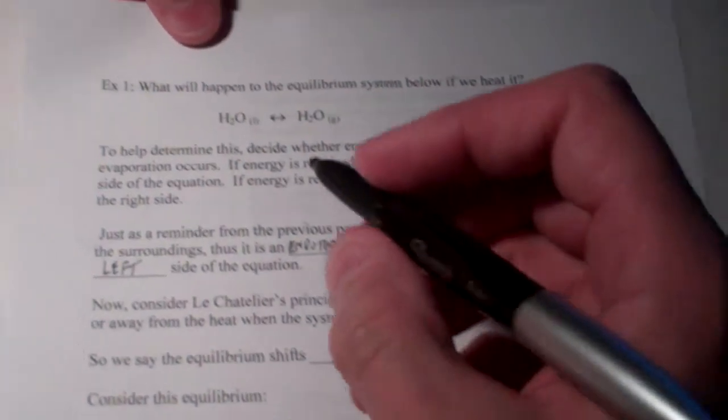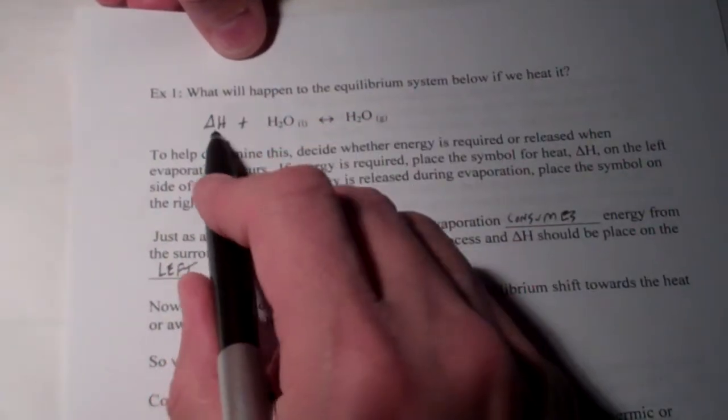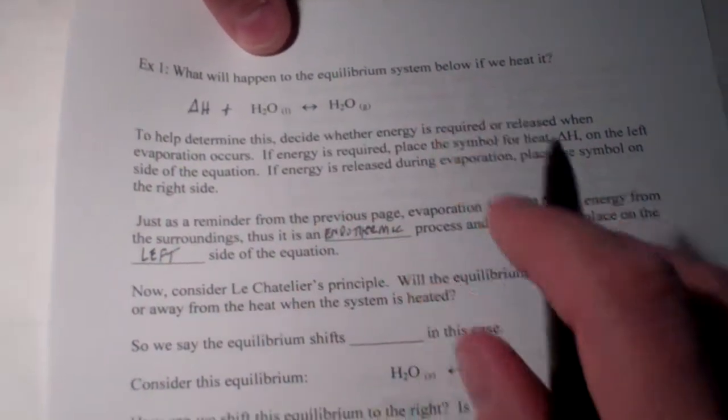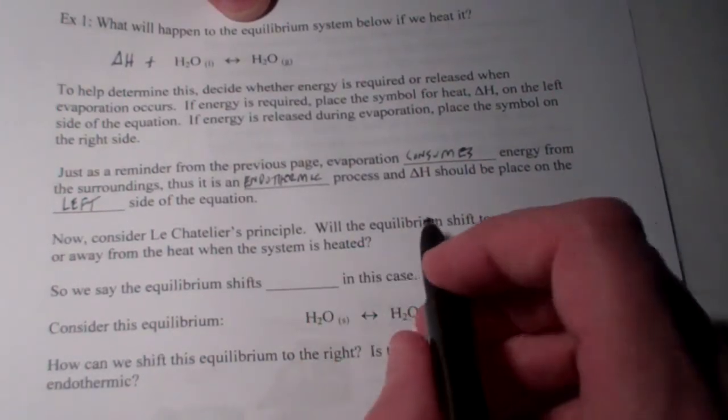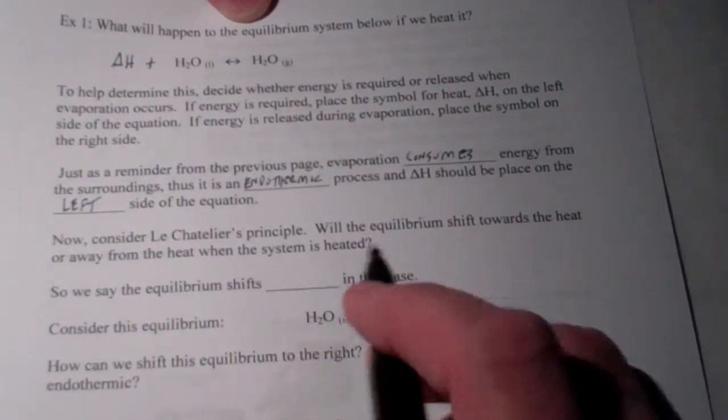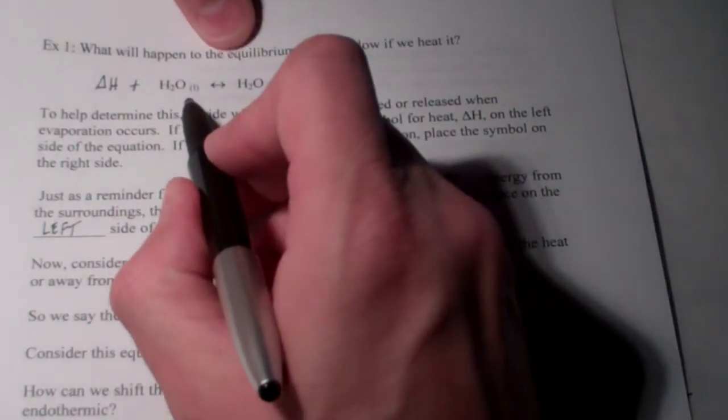That means it consumes energy. And delta H should be placed on the left-hand side of the equation. So, we're going to put the symbol delta H on the left-hand side, meaning heat is required for this liquid to turn into a vapor. Now, let's consider Le Chatelier's principle. Will the equilibrium shift towards the heat or away from the heat when the system is heated?